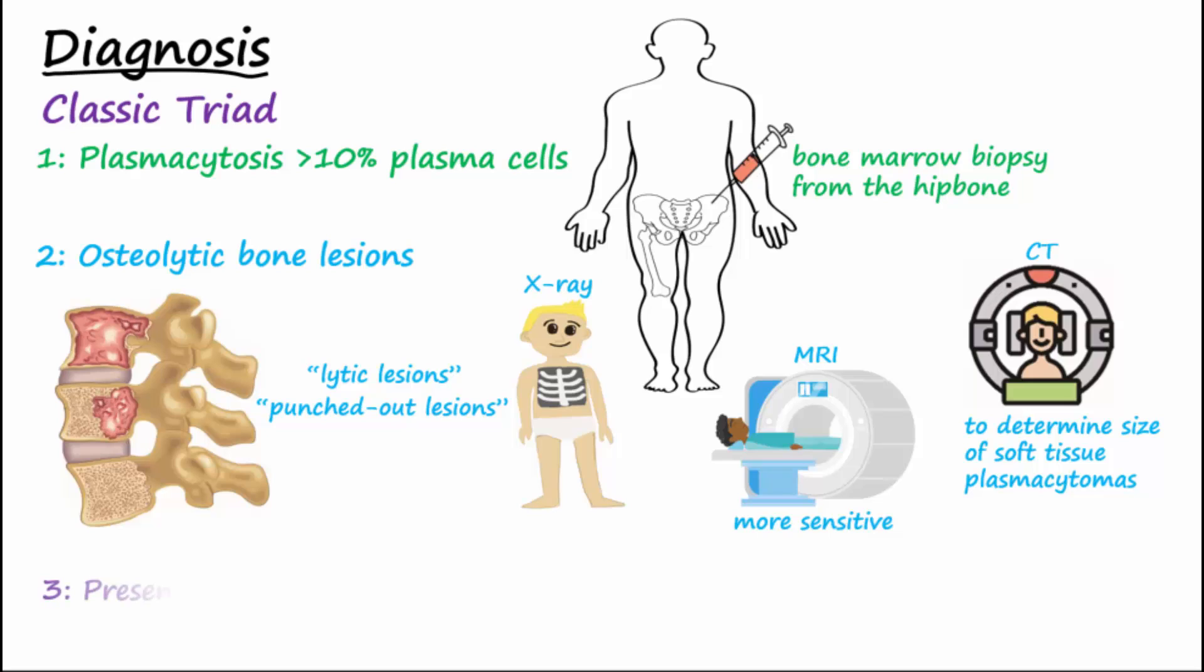Third, presence of M protein in the plasma and Bence Jones proteins in the urine, both of which are produced by the malignant cells.